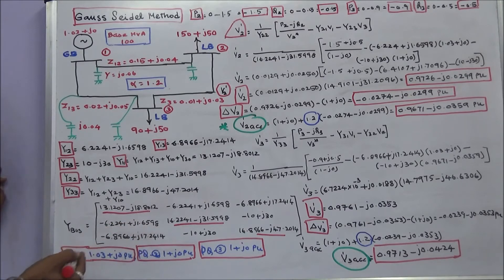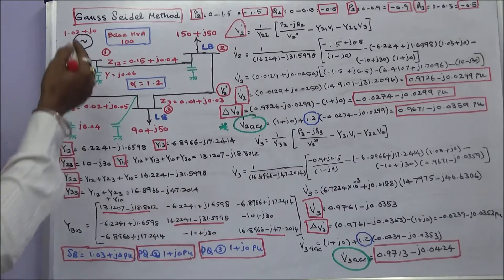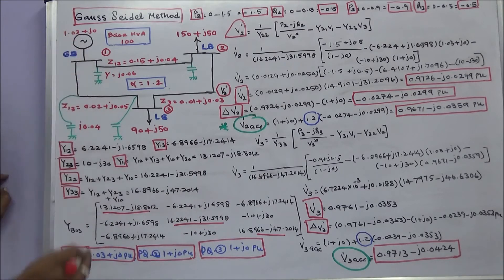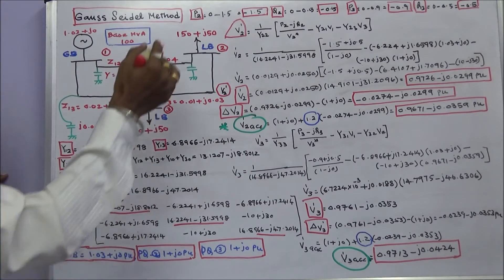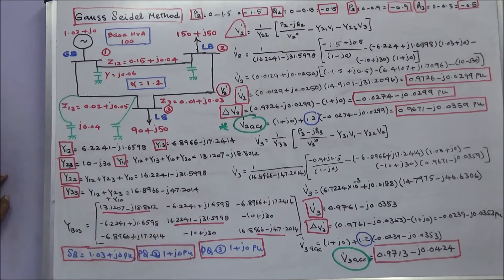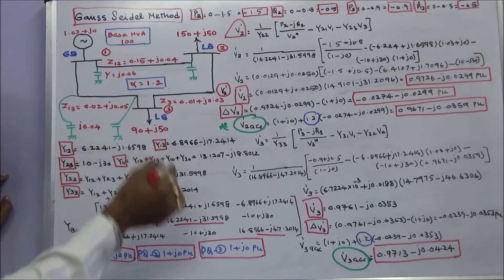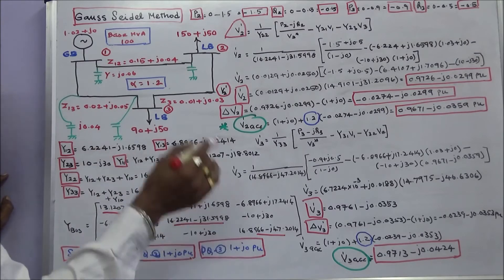The second step is to initialize the bus voltages. Bus 1 voltage is given as 1.03 + j0 per unit. Bus 2 voltage is initialized as 1 + j0 per unit. Bus 3 voltage is initialized as 1 + j0 per unit.